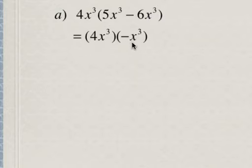So now we can multiply these two, and again remember when you multiply powers with the same base, all you do is add the exponents and we multiply the coefficients here. So this is just going to be negative 4 and x cubed times x cubed, add the exponents and you get x to the power of 6.